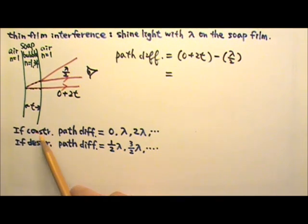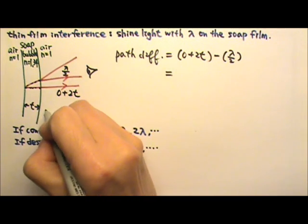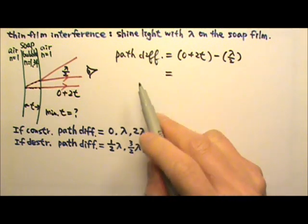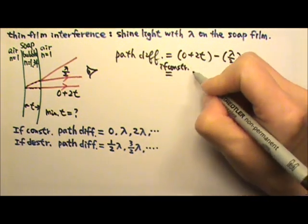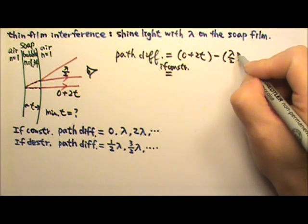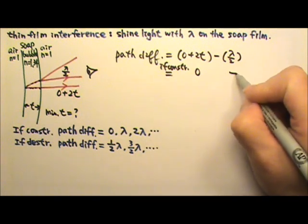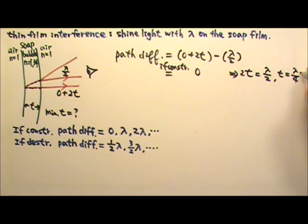For constructive interference, the path difference should equal 0, lambda, 2 lambda, and so on. For destructive interference, the path difference should be half-wavelength values. For minimum thickness, we start from the smallest number. For constructive interference: 0 plus 2T minus half-wavelength equals 0, so 2T equals lambda over 2, meaning the thickness equals lambda over 4. But this is the wavelength inside the thin film.